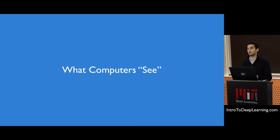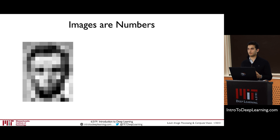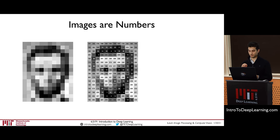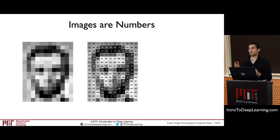Let's use an image as our base example. To a computer, images are just numbers — two-dimensional lists of numbers. Suppose we have a picture of Abraham Lincoln. It's made up of what are called pixels. A pixel is simply a number represented by a range of either 0 to 1 or 0 to 255. Since this is a grayscale image, each pixel is just one number.